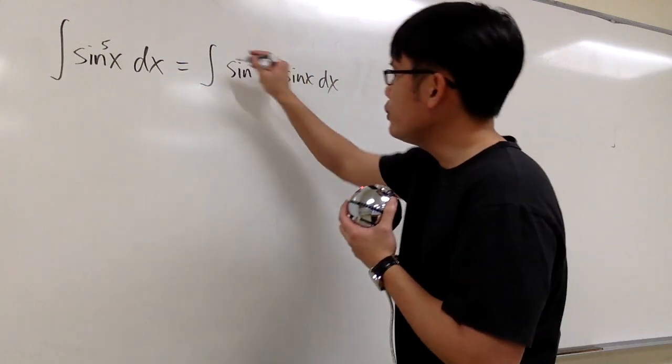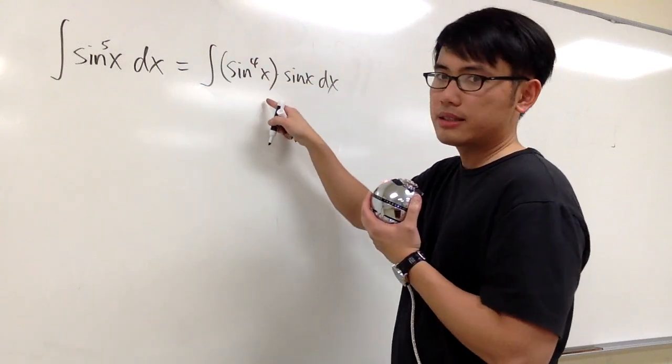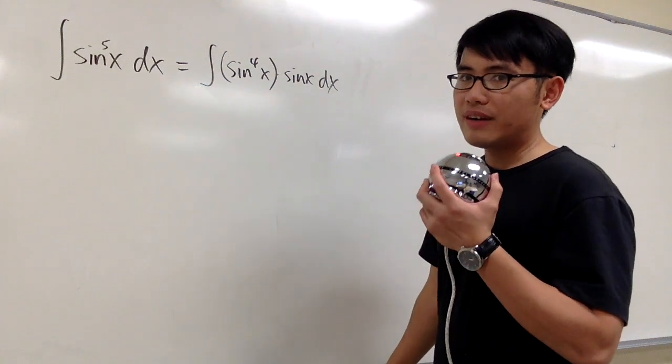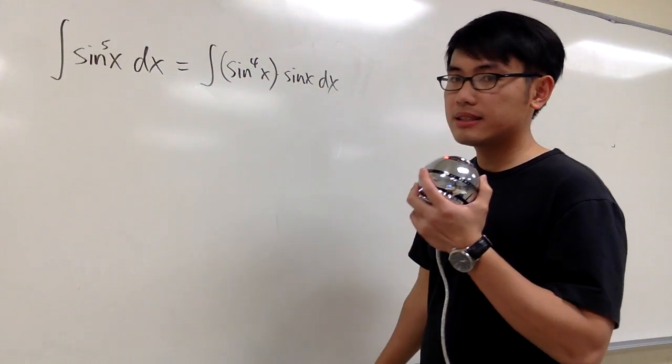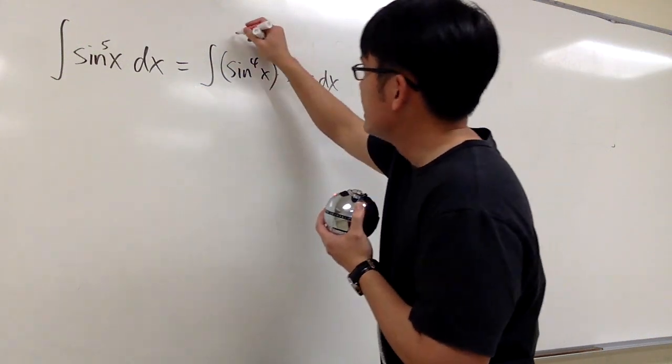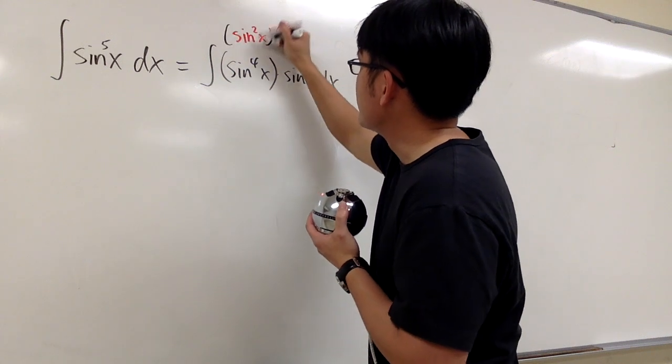If you want to do that, let's look at this. This is sin to the 4th power x. Remember, we only have identity for sin to the 2nd power x. So let's look at this as sin squared x raised to the 2nd power.